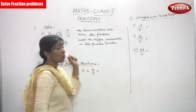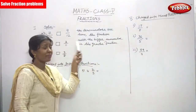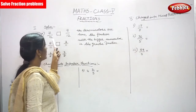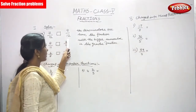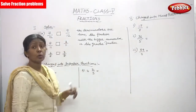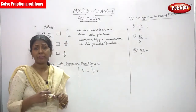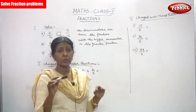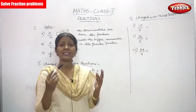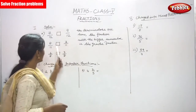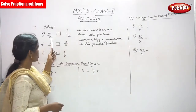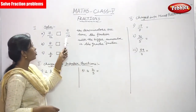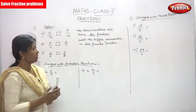Now we are going to solve some fraction problems. The first one is 7 by 12 and 9 by 12. I have told you already what a like fraction is — if the denominators are the same in all the fractions, it is a like fraction. So look at the numbers: 7 by 12 and 9 by 12. Find out which is the greater fraction.